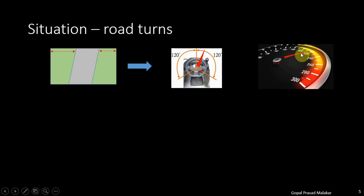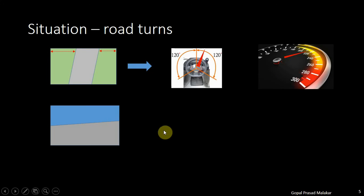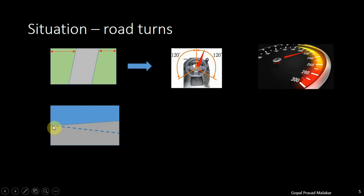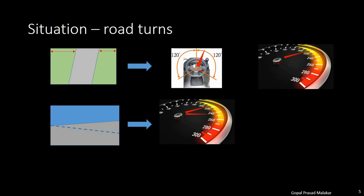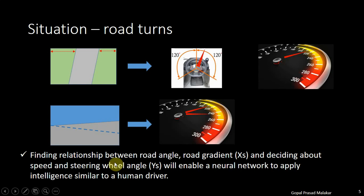You can also record what speed has been taken by the driver. In this situation, the road angle is x — the independent variable — and the steering wheel angle and speed are the dependent variables, the y. Speed is relatively more complex because it will also depend on the gradient of the road. If the road is turning, you want a certain gradient; if this part is above the ground and it's slanting, you can get a little extra speed. So road angle and road gradient are the inputs x, and the steering wheel angle and speed are the exhibited behavior y.